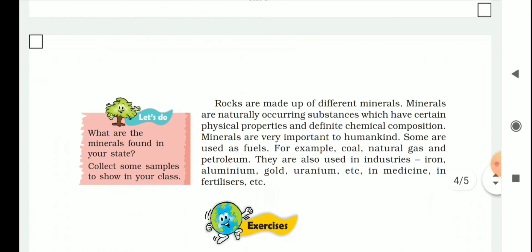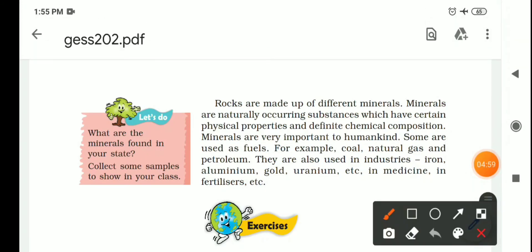Next topic. Rocks are made from different minerals. Minerals, we have studied like silicon, aluminum, such as many minerals. They are made from rocks. What are minerals? Minerals are naturally occurring substances, which have some physical properties and definite chemical compositions. Minerals are naturally occurring substances which have certain physical properties which are different for different minerals. And their chemical composition is definite.